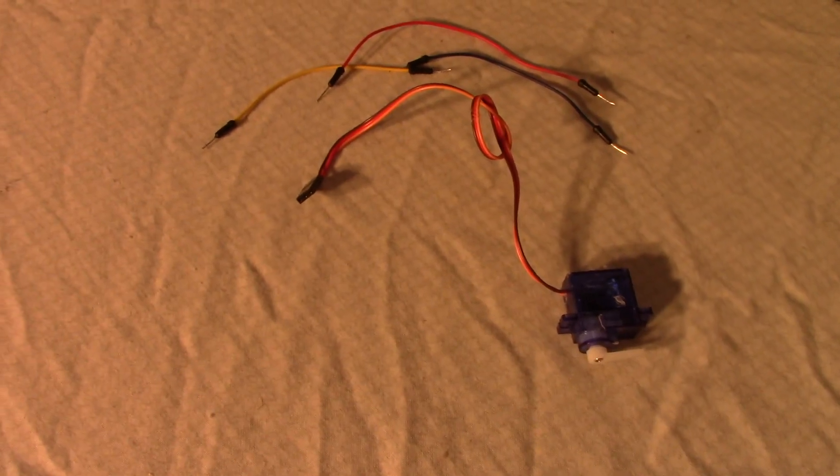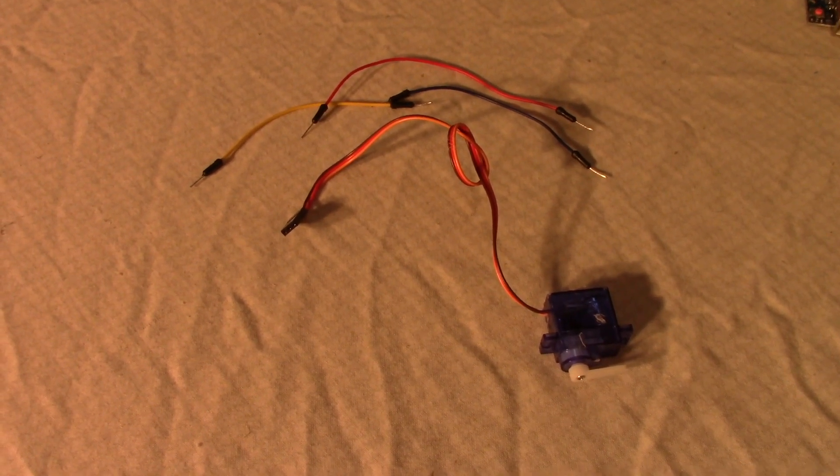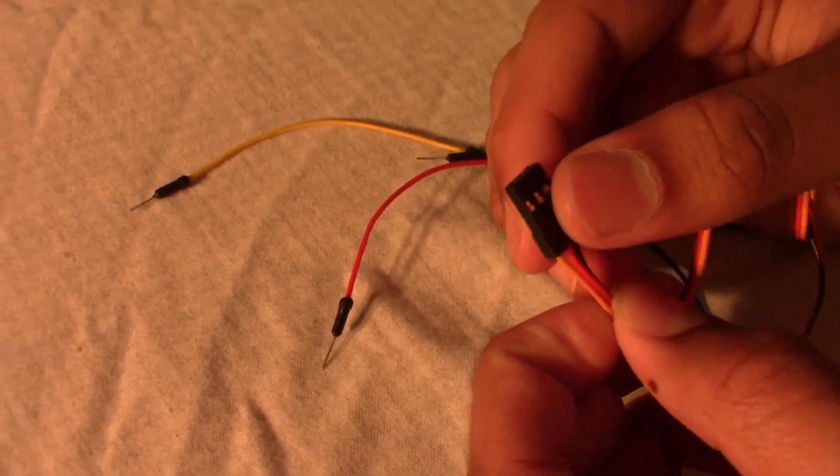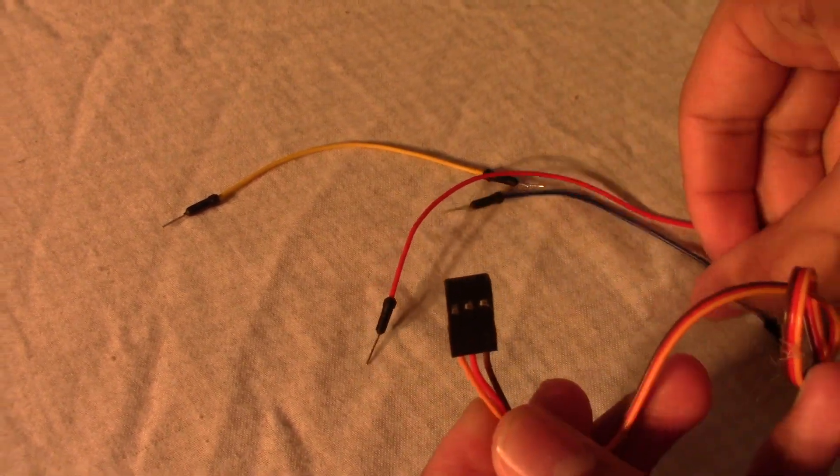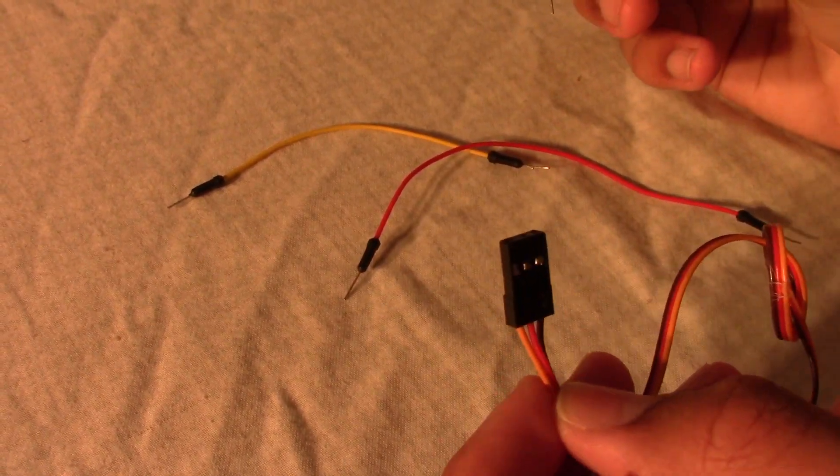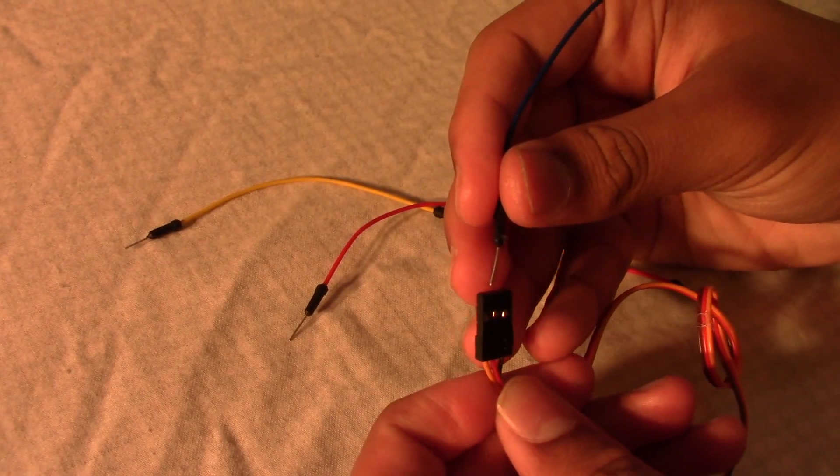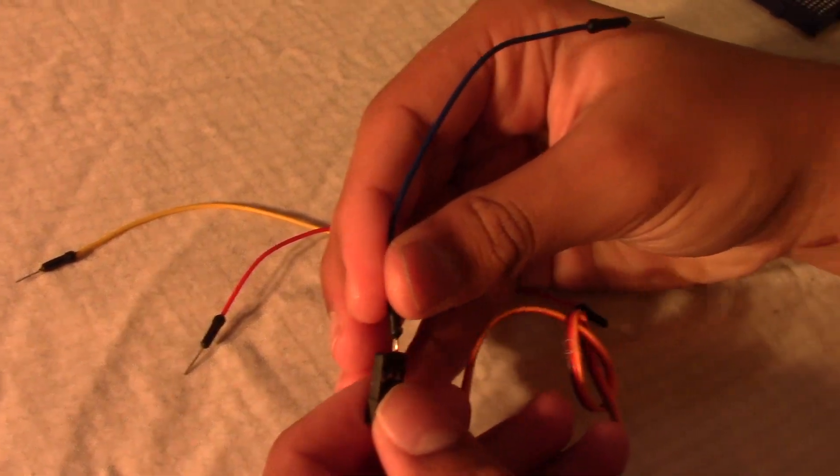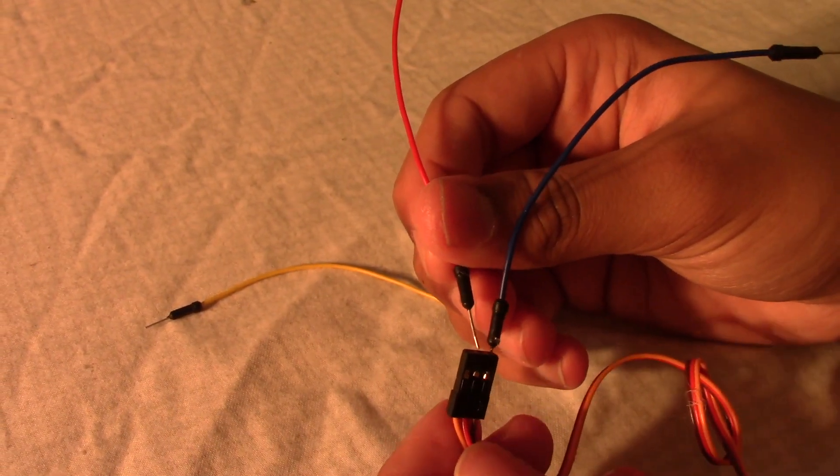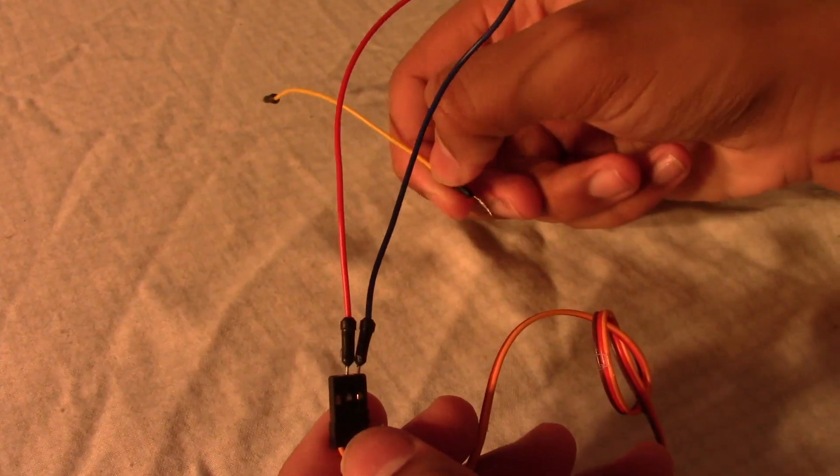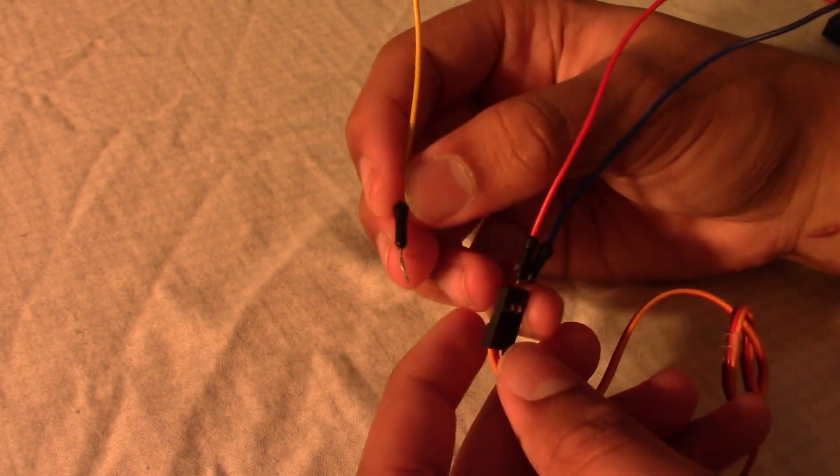The next step is to extend your servo motor wires. As you can see over here, there are three colors of wires: brown, red, and yellow. We connect the blue wire to the brown pin, the red wire onto the red pin in the middle like this, and the yellow wire on the yellow pin over here like this.